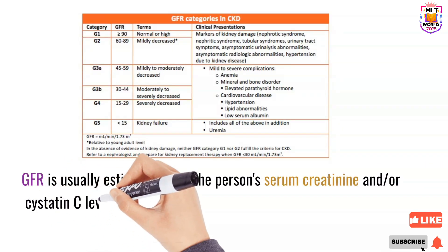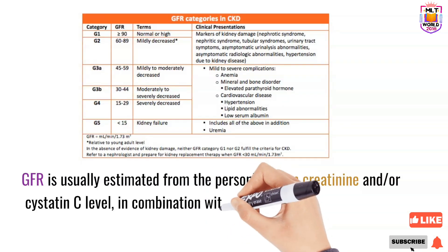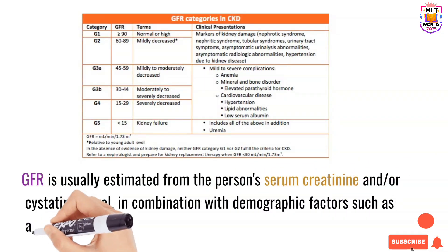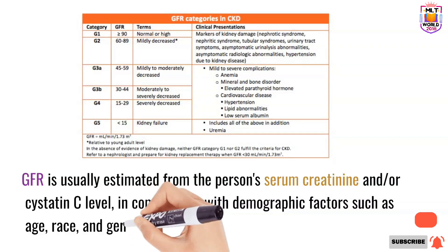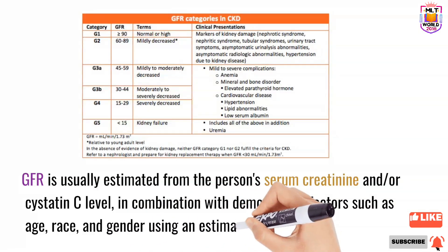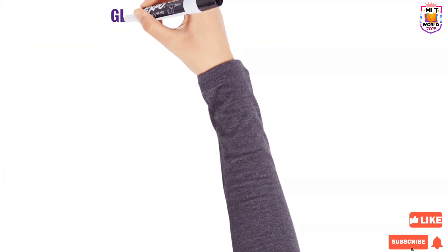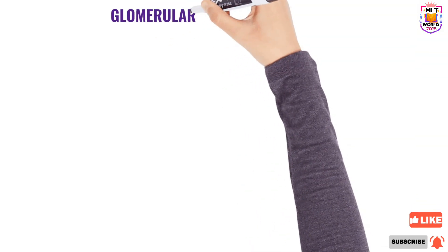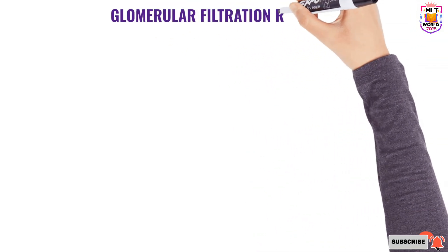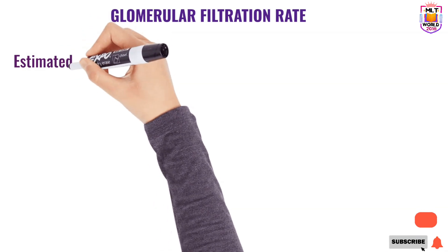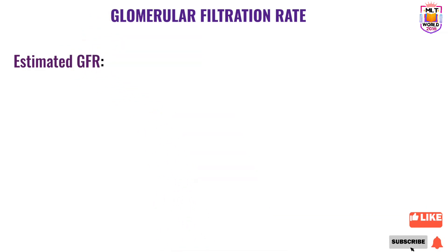GFR is usually estimated from the person's serum creatinine or cystatin C level, in combination with demographic factors such as age, race, and gender, using an estimation equation. So glomerular filtration rate is calculated as estimated GFR. There is actual GFR and estimated GFR.